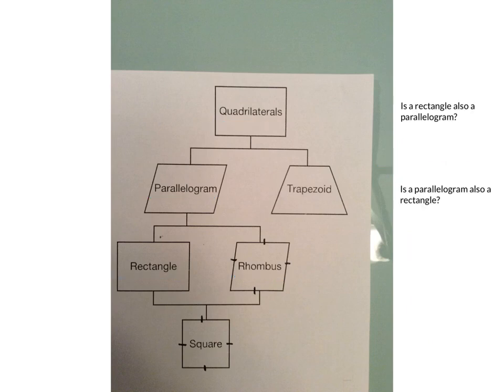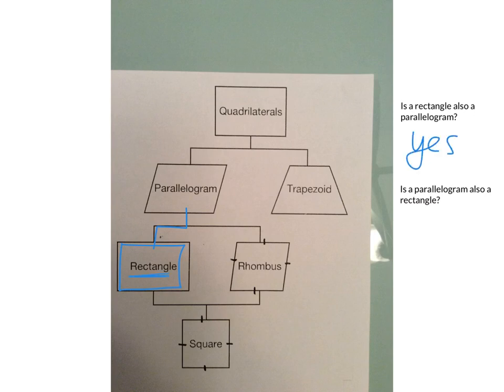Now we have some generalizations to evaluate as true or false. First: is a rectangle also a parallelogram? Yes, it is, because it falls underneath the parallelogram on the family tree. So a rectangle is a parallelogram and a quadrilateral.